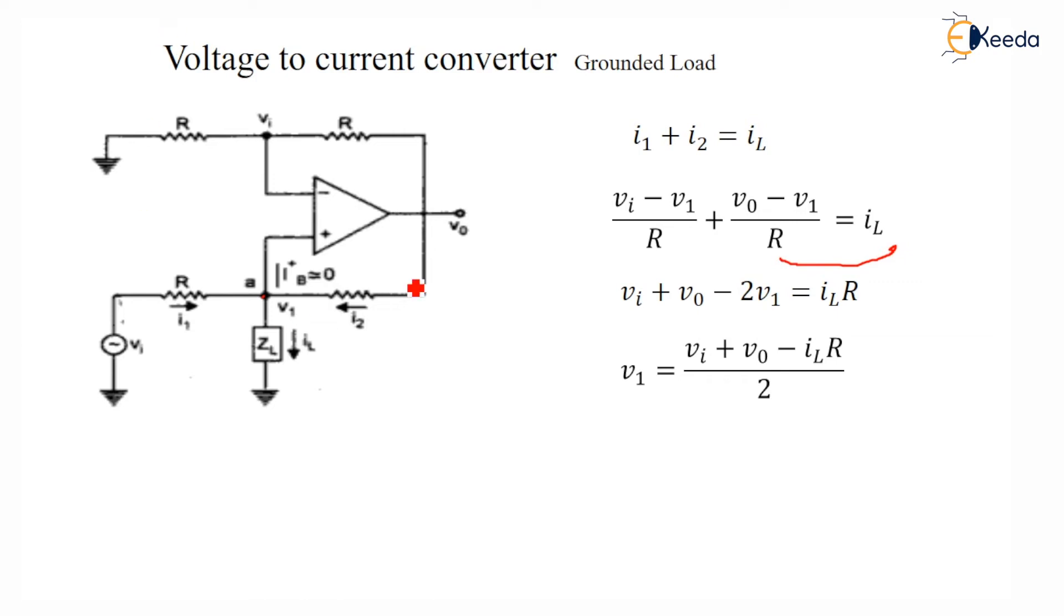So here after simplification, V1 is equal to VI plus Vout minus IL R divided by 2. So I know gain is equal to 2.